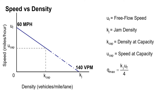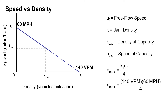We can find our maximum flow, Q max, which is equal to our jam density times our free flow speed divided by 4. So this is 140 vehicles per mile multiplied by 60 miles per hour divided by 4, which gives us a maximum flow of 2,100 vehicles per hour.